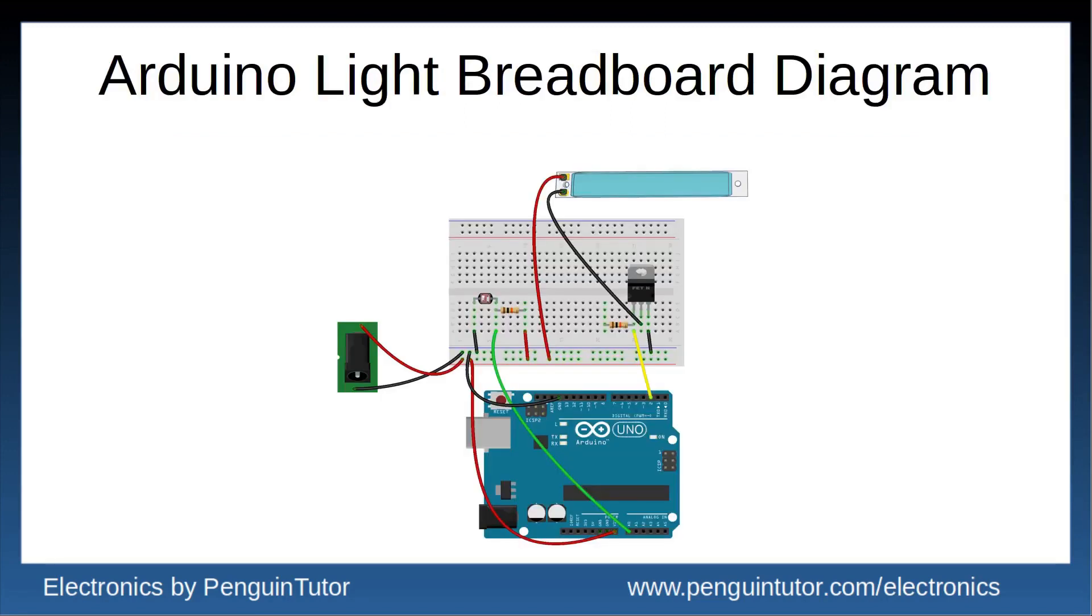This is the breadboard design incorporating the LED voltage divider on the left and the MOSFET switch on the right. An external power supply is used, which is used to power the LED and is also connected to Vin on the Arduino, so it will also power the Arduino. If you have a USB connection to the Arduino for programming, then I recommend disconnecting the LED strip, as it may otherwise exceed the maximum current from the USB port.